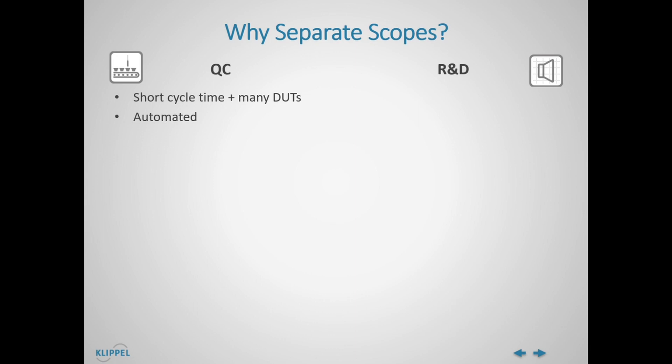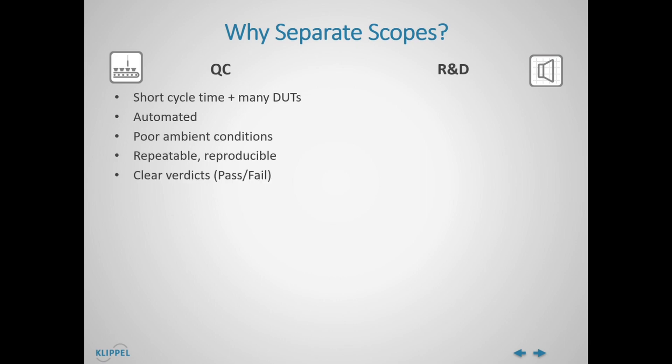We usually have poor ambient conditions in terms of climate, poor acoustics, heavy noise disturbance, and parasitic vibrations. Repeatable, reproducible, and meaningful results are more important than absolute accuracy in terms of spec sheet test conditions. In QC, we need clear test verdicts such as pass-fail, quality grades, and failure classification.